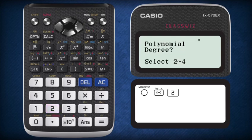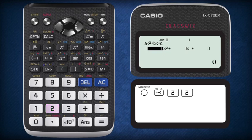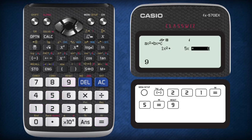Since we are dealing with a quadratic function, we choose a second-degree polynomial, so we press 2. Key in the coefficient of x squared, x, and the respective constant, pressing equal after keying in every value.